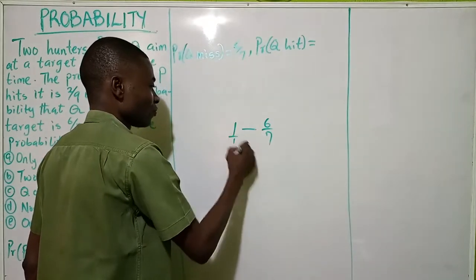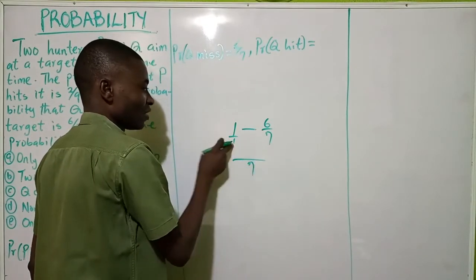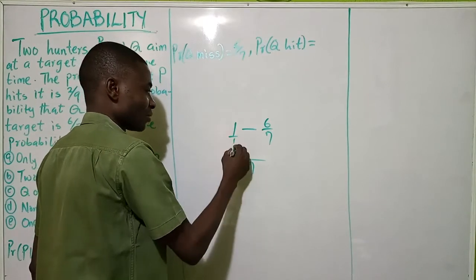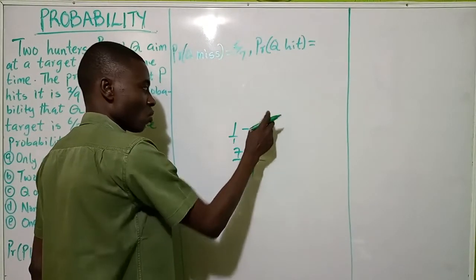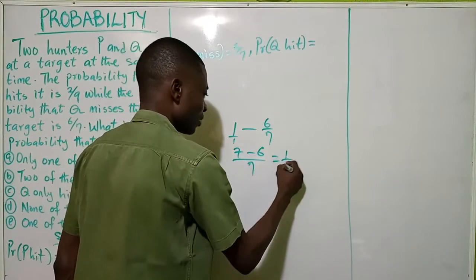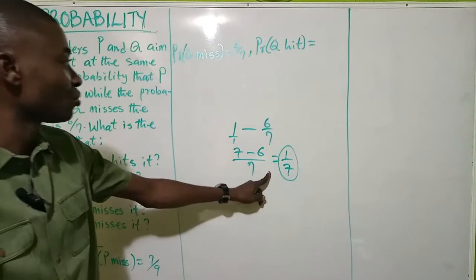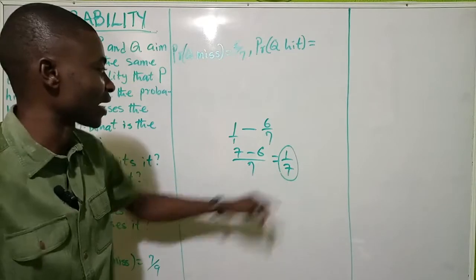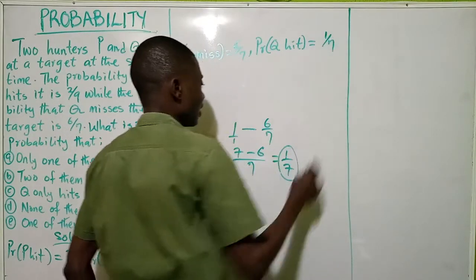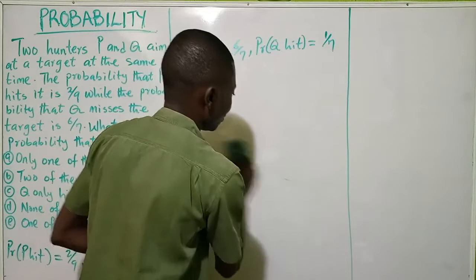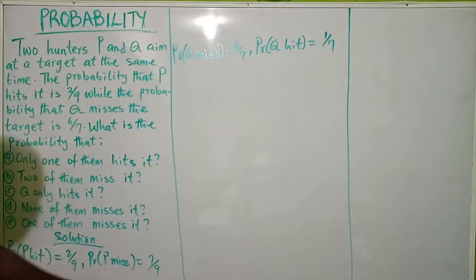When you solve this, the LCM of 1 and 7 is 7. 7 divided by 1 is 7, times 1 is 7, minus 7 divided by 7 is 1, times 6 is 6. That gives 1 over 7. So the probability that Q hits the target is 1 over 7. Now with this information we can successfully answer these 5 questions.